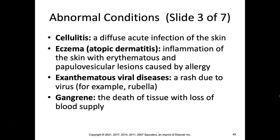Cellulitis is a diffuse acute infection of the skin caused by inflammation, usually requiring antibiotics. Eczema, also called atopic dermatitis, is an inflammation of the skin with lesions related to allergy. It can appear anywhere — face, arms, legs — and is very itchy, causing flaking and peeling. Many medications have been developed to treat it, though there is ongoing question about whether eczema is autoimmune, hereditary, or something else.